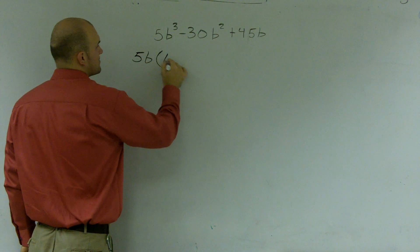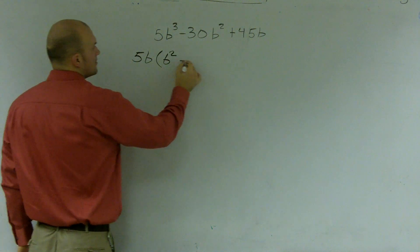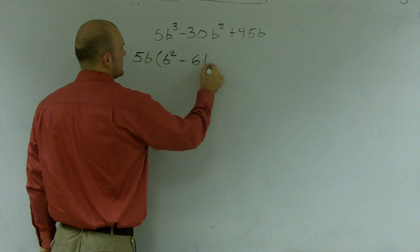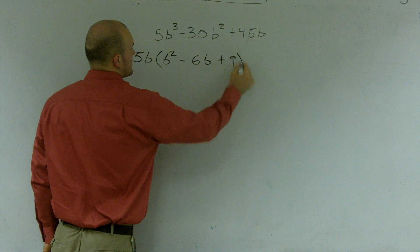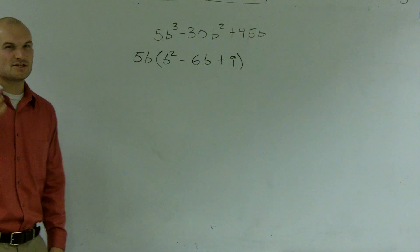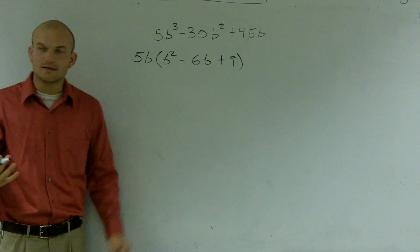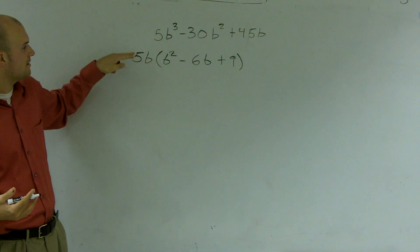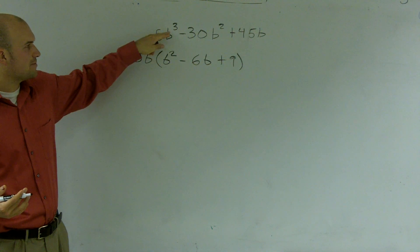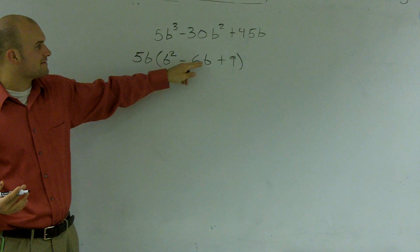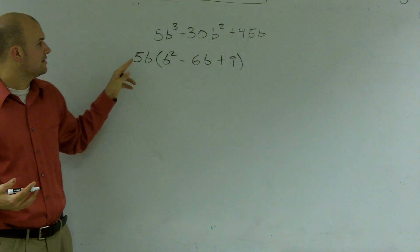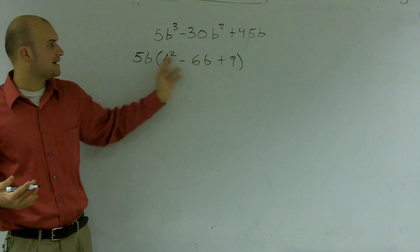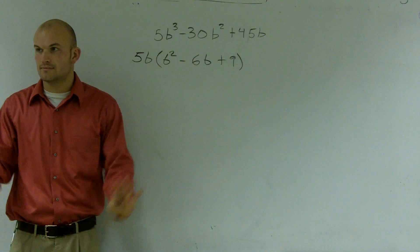what I'm left with is b squared minus 6b plus 9. To check that you factored it out correctly, go back and do the distributive property: 5b times b squared is 5b cubed, 5b times negative 6b is negative 30b squared, and 5b times 9 is 45b. Okay, we'll go with that.